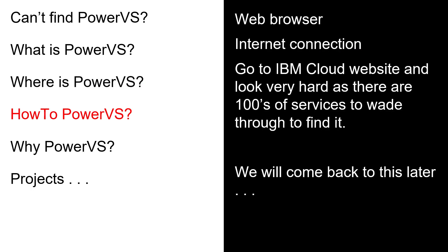So how do you get started with PowerVS? Well, you need a web browser and an internet connection - if you're watching this video, you've probably got those already. Then you go to the IBM Cloud website. But it can be pretty hard to actually find Power Systems Virtual Server in there because there are hundreds of services available to you. We'll come back to that a little later.